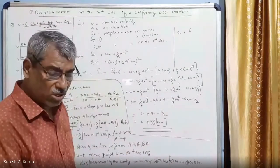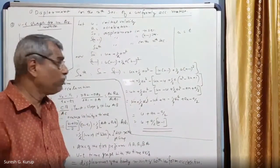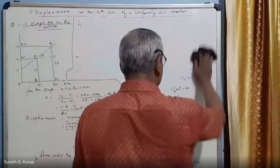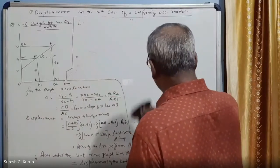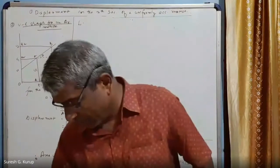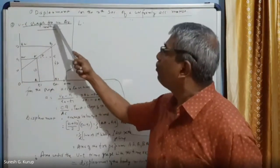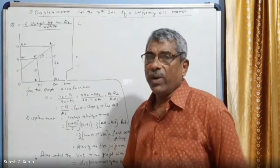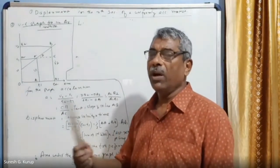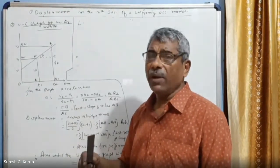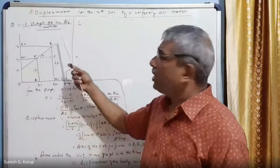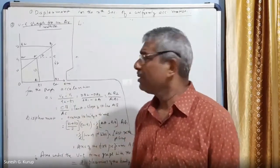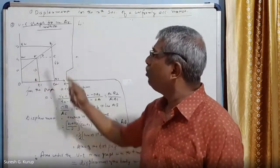The next thing to study today is the velocity-time (vt) graph — the velocity-time graph for uniformly accelerated motion. In uniform acceleration, acceleration remains constant because the change in velocity per unit time is always constant. Therefore, the velocity-time graph of a body moving with uniform acceleration is a straight line inclined to the time axis.